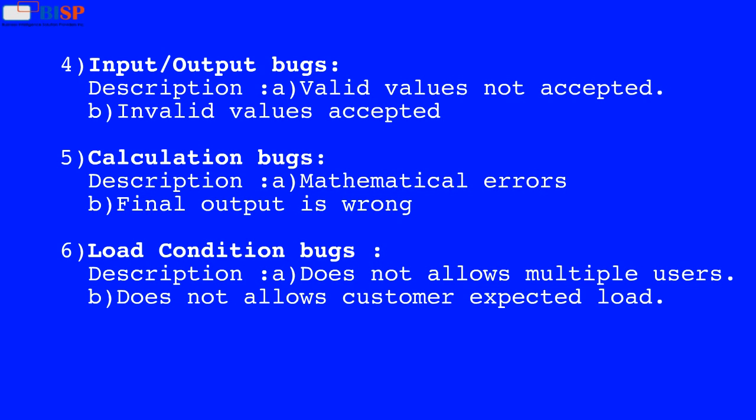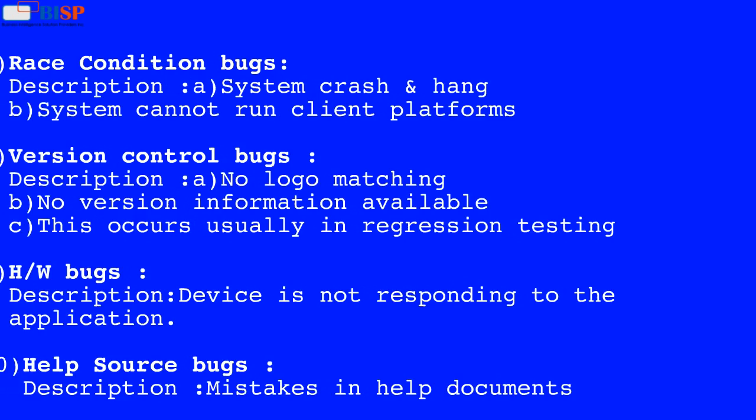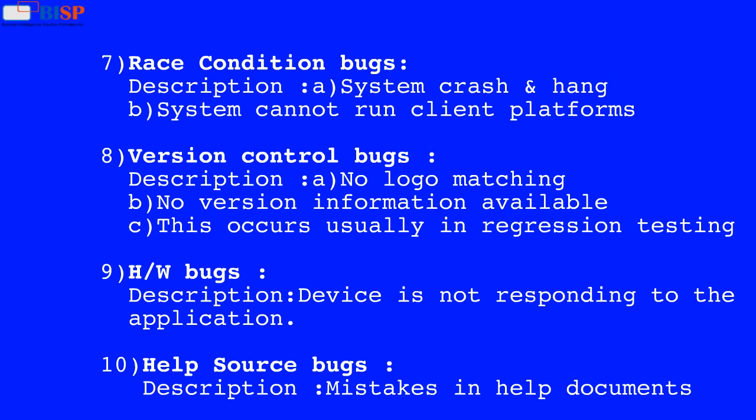6. Load condition bugs. Description: A. Does not allow multiple users. B. Does not allow customer expected load. 7. Race condition bugs. Description: A. System cannot run on client platforms.